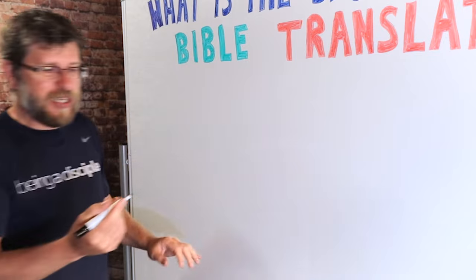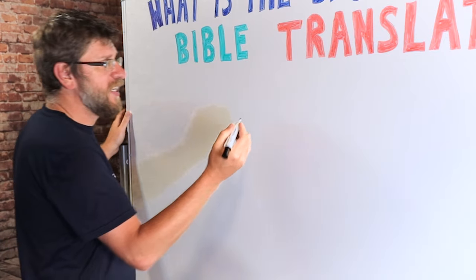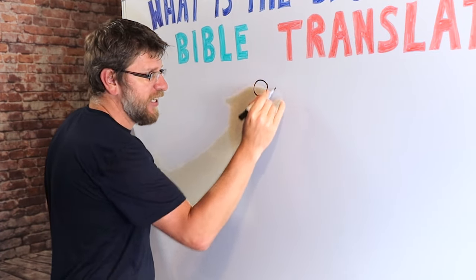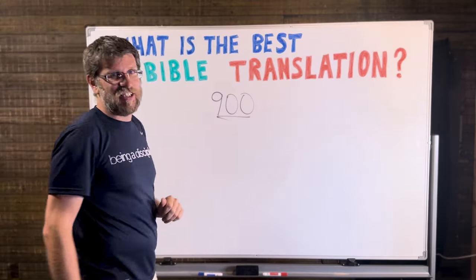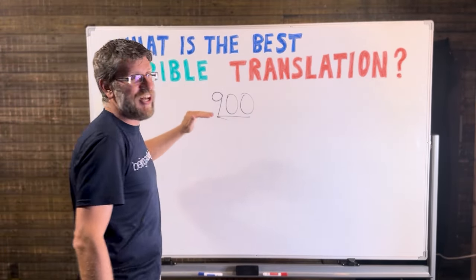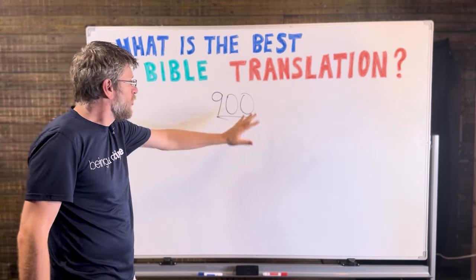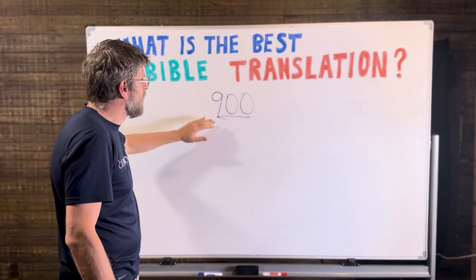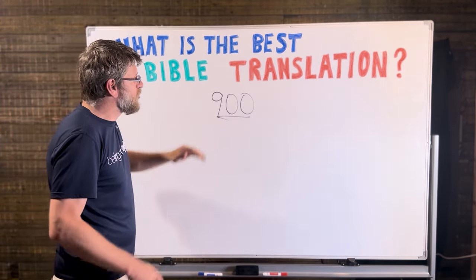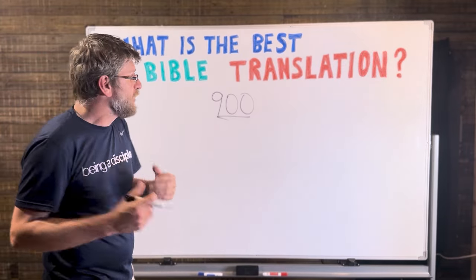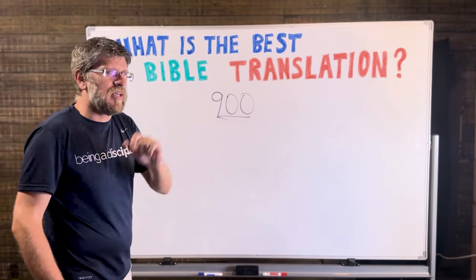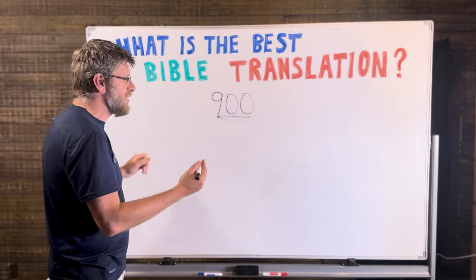When we look at the English translations, we can look at over 900 different English translations of the Bible. That is a lot of translations. Over a hundred of them are well published. You can go out and buy them online or in a bookstore. Why in the world do we have so many English translations of the Bible? It really comes down to just one significant thing, and that is time.